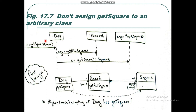Looking at the Dice object in the sequence diagram, which has received a getSquare message, you can see getAllSquare is going towards the Board class or Board object. Then from the Dice object, there is another message going towards Map. There is a MapSquare object here, and you can also see another message going there as well.